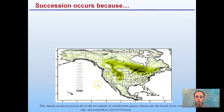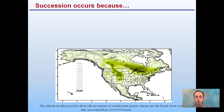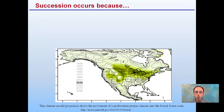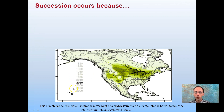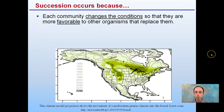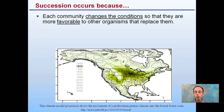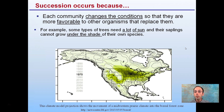Succession occurs because we can see it progressing over years. This climate model shows the movement of the Midwestern prairie climate to the forest zone, starting at 1890 and estimating its progression northward all the way to 2090. Each community changes the conditions so they are more favorable for other organisms that replace them. For example, some types of trees need a lot of sun, and their saplings cannot grow under the shade of their own species — trees essentially don't compete with their own offspring.